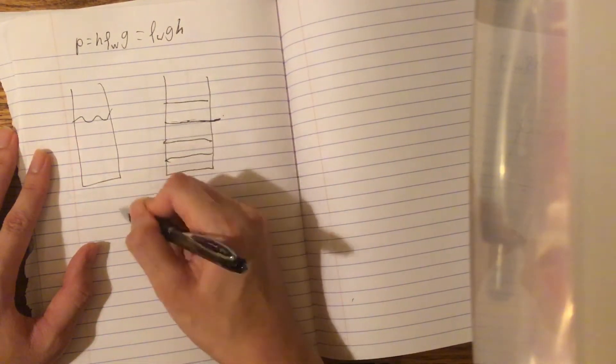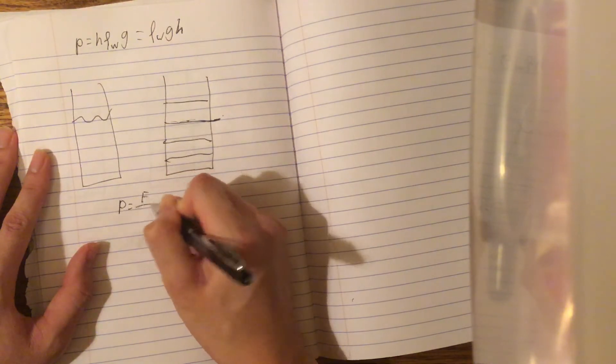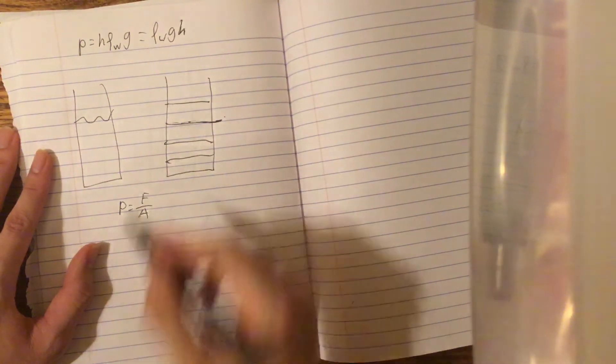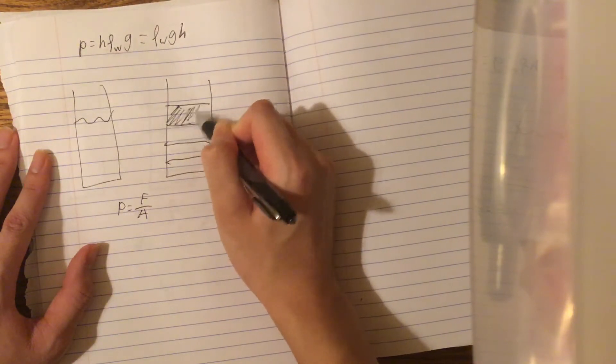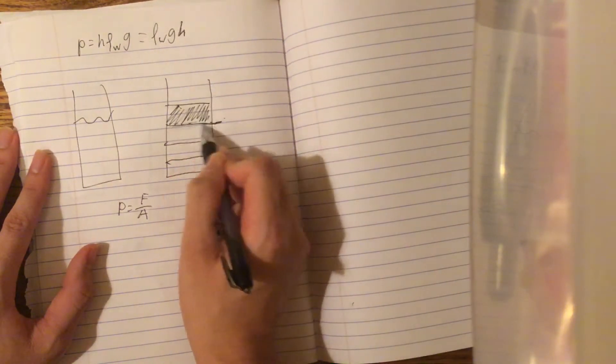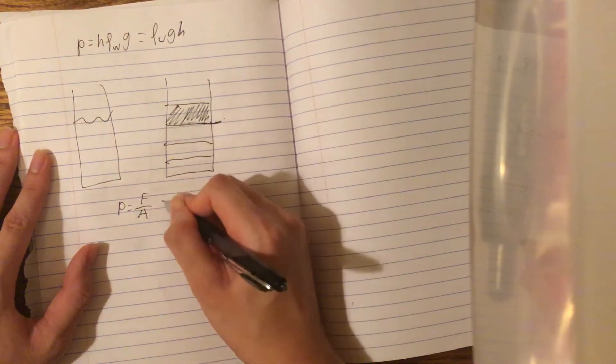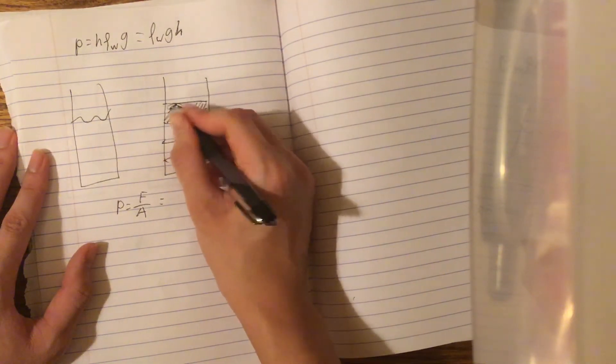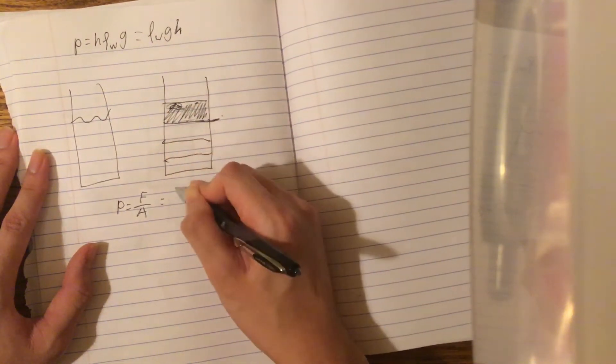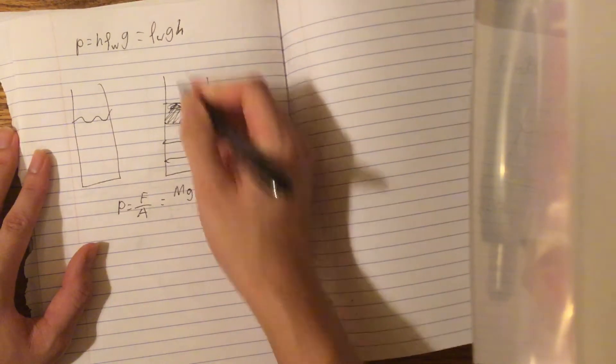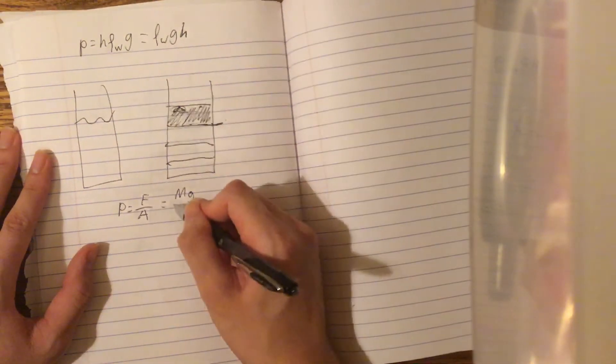Well, pressure equals force over area. So if we're only taking into account this block and we want to find this pressure, the force is merely the weight of the block, which is mass times the gravitational constant over area.